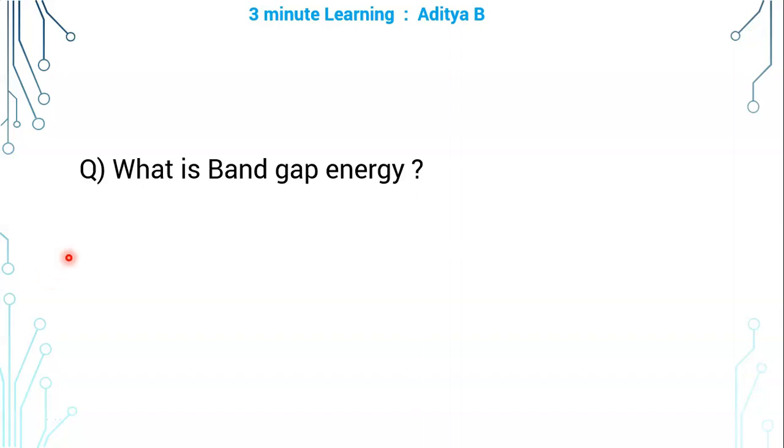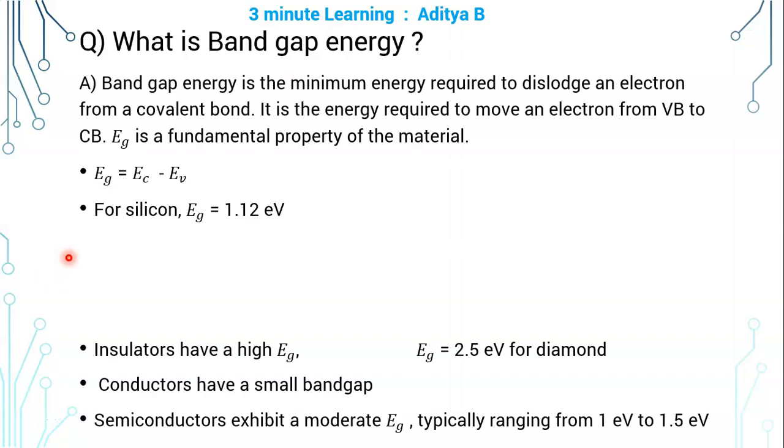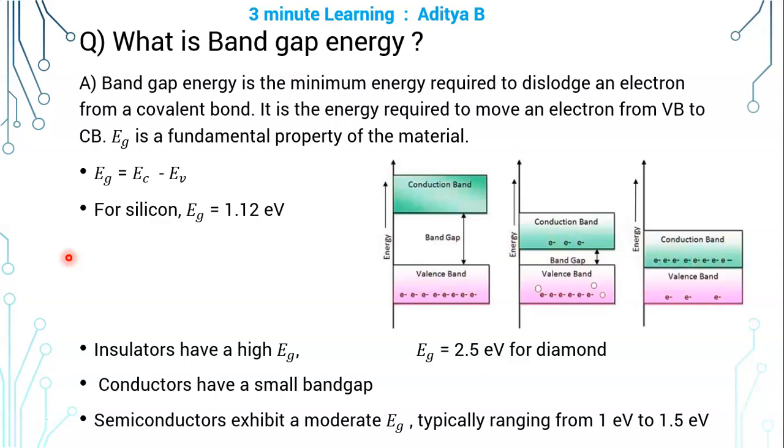What is band gap energy? Energy band gap is the minimum amount of energy required to dislodge an electron from a covalent bond.